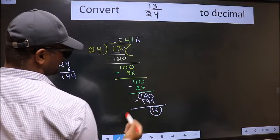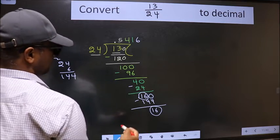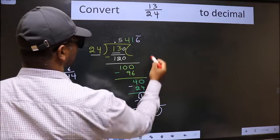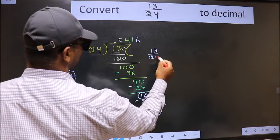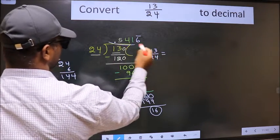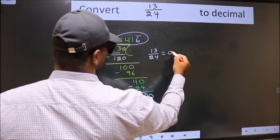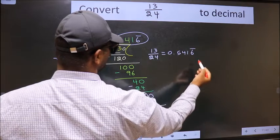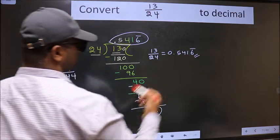Earlier also we got 16. That means we get a repeating pattern, so we put a bar on this number. Therefore, the decimal of 13 by 24 is 0.5416 with a bar on 16. This is our answer.